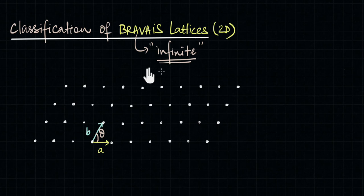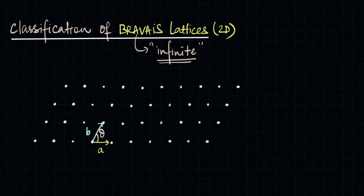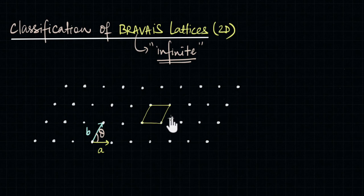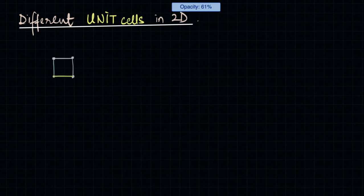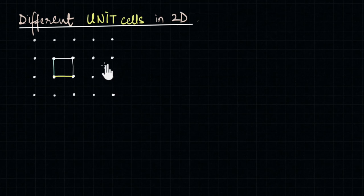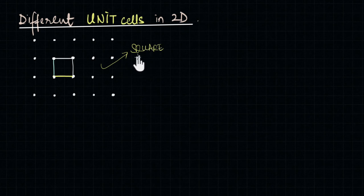So now that we have established that there are infinite different lattices, is there any way of classifying them into some categories? Well, we know that a lattice is named after its unit cell, and different lattices might have different unit cells. So one way of classifying these lattices could be on the basis of the unit cell that makes up the lattice. The most common unit cell that comes to mind is a square. If we try to build up a lattice using a square as the unit cell, the lattice looks like this — we can call all such lattices the square lattice.